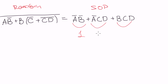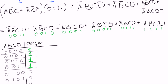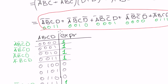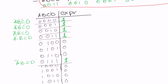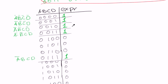We also looked into the standard sum of products form, like this one we calculated. It was the same except that in all the terms we had all the variables, which made it look exactly like a truth table for ones. And here is the truth table we made.